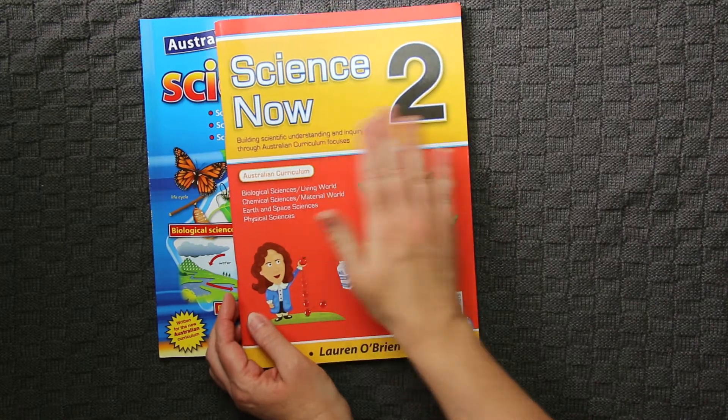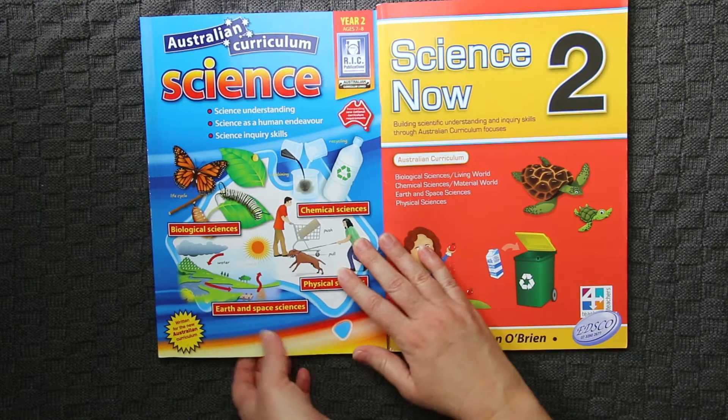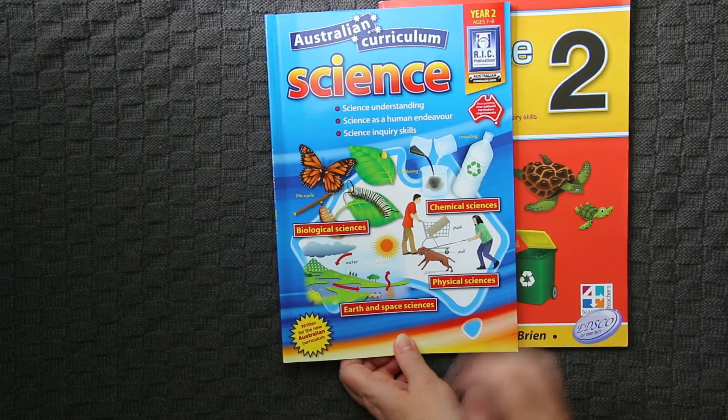So that is Science Now, Grade 2, Australian Curriculum Aligned, put out by Teachers for Teachers. And then we have the RIC Publications Year 2, Australian Curriculum Science.